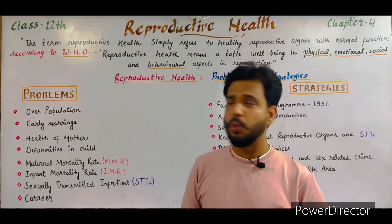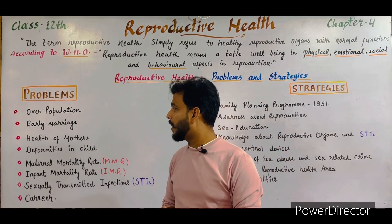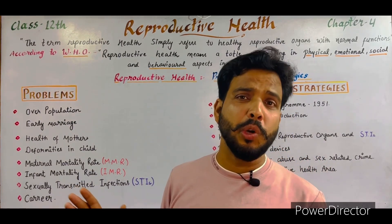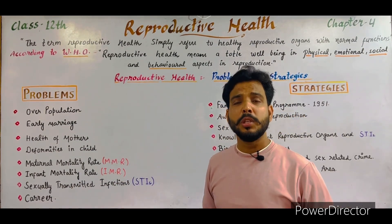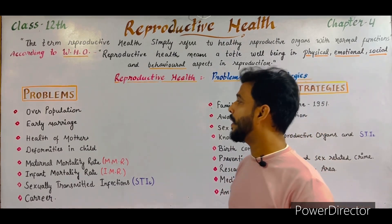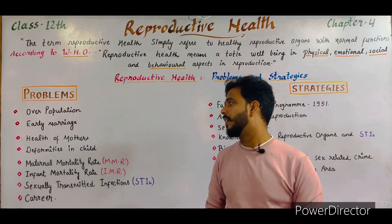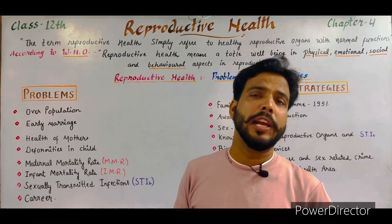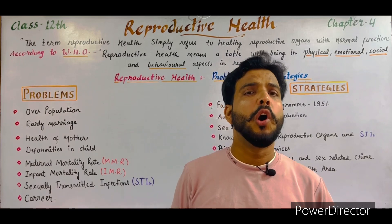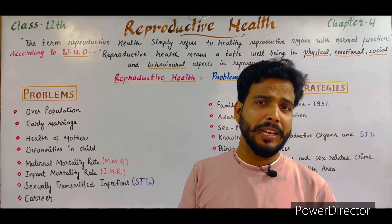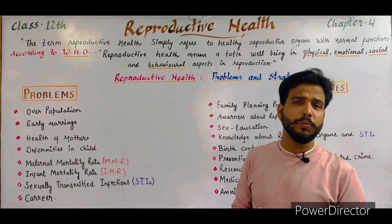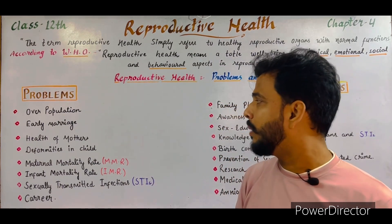The next problem is the health of mother. Early marriage causes different kinds of diseases in the mother. If a person gets married so early, they do not have knowledge about the reproductive system, which may cause different health problems for the mother. Next is deformities in the child — deformities means abnormalities. A child may be born with genetic disorders or physical deformities in hands, legs, etc., which are very common when early marriage occurs and the mother's health is poor.